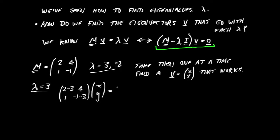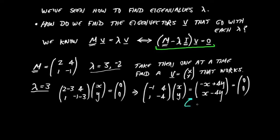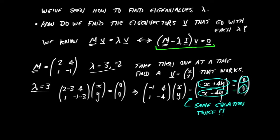We're saying that when that matrix multiplies our vector x, y, it gives us 0, 0. Cleaning this up: we have minus 1, 4, 1, minus 4 onto x and y. Multiplying out gives minus x plus 4y and x minus 4y, equal to 0, 0. We immediately notice that whilst this equation between two column vectors is telling us two things, it's actually telling us the same equation twice — minus x plus 4y equals 0, and x minus 4y equals 0.